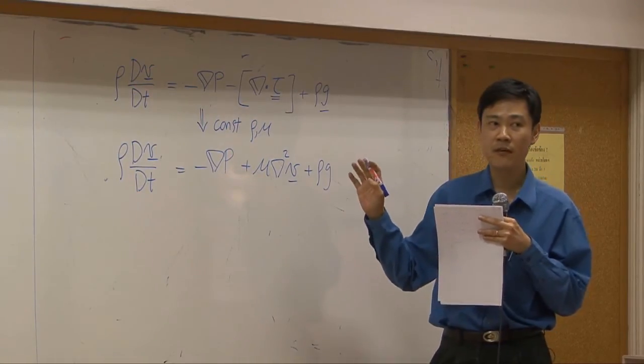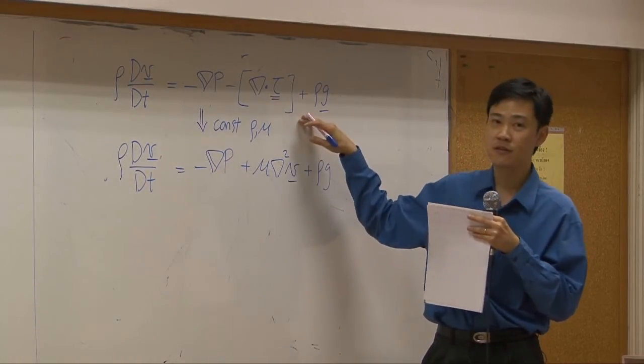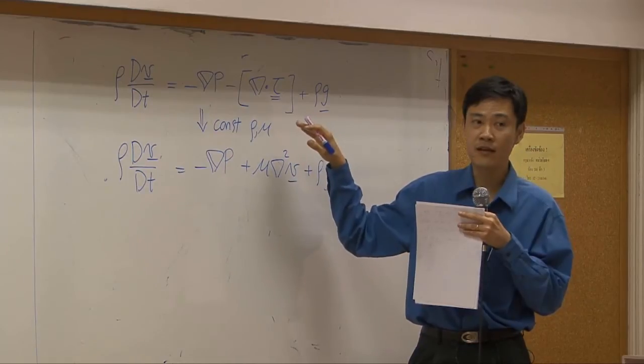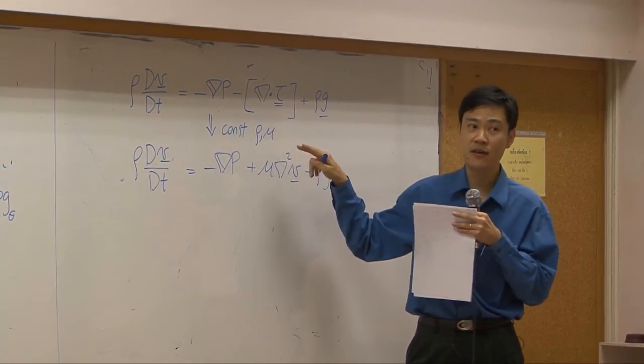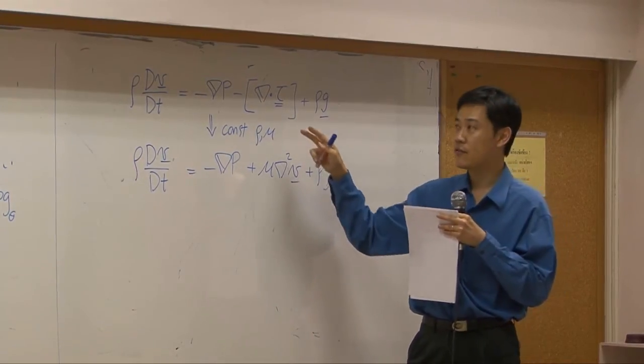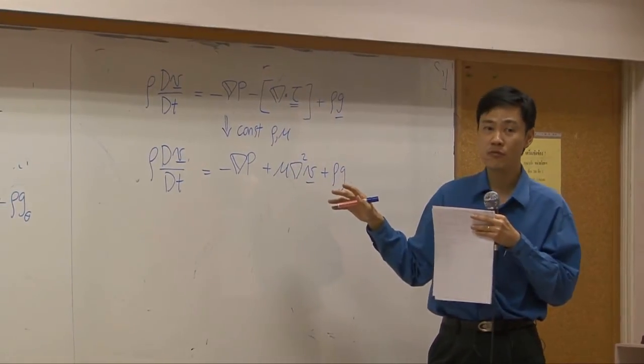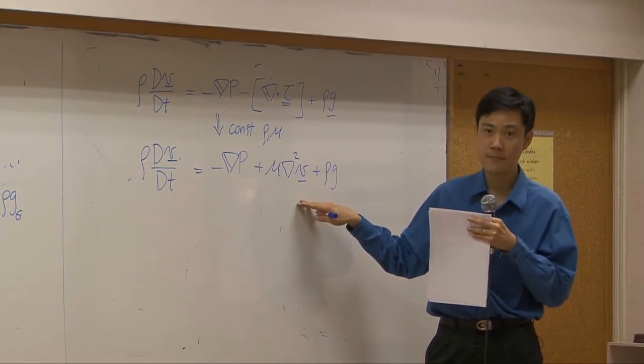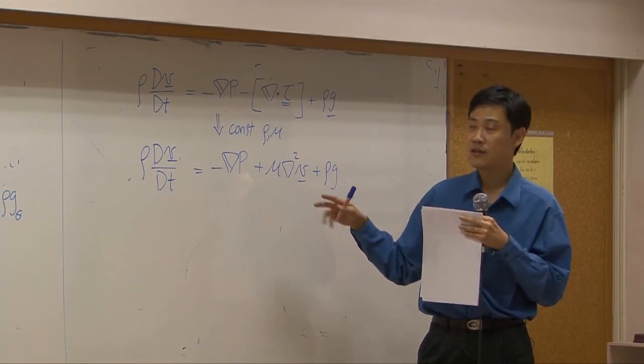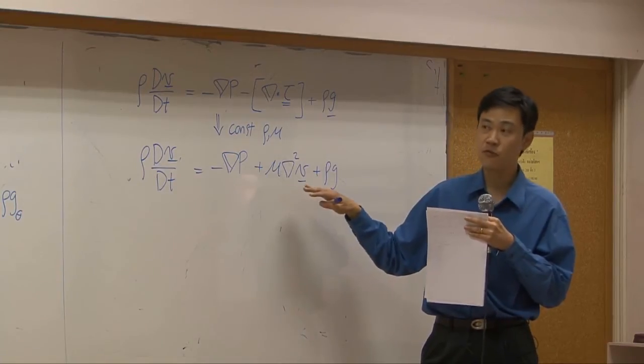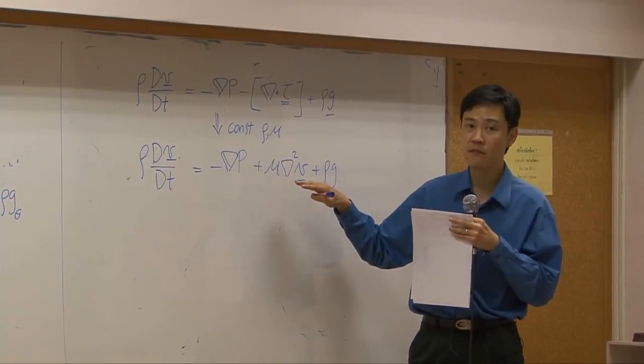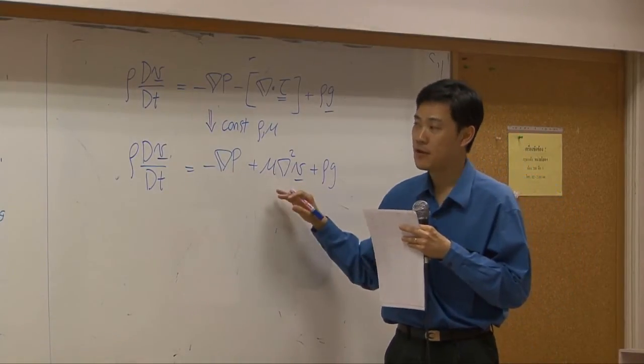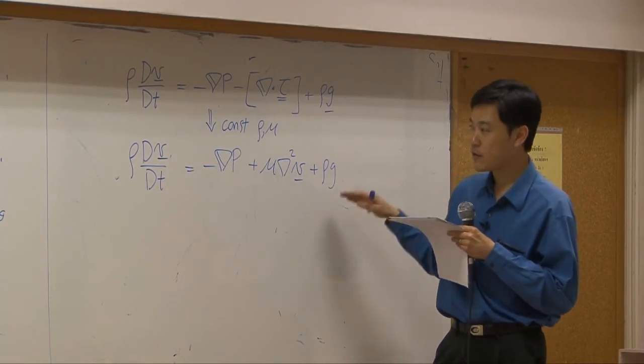We derived these on Wednesday. The first one is called the equation of motion in general form. Then, after applying the assumption for constant density and constant viscosity fluid, which is mostly liquid, you can reduce the form by applying Newton's laws and you get this equation. This equation is called the Navier-Stokes equation. On the last class, we applied Navier-Stokes equation for two examples, and I just want you to see that the Navier-Stokes equation in vector form can be applied in any coordinate system.